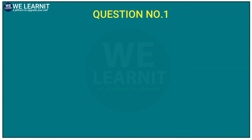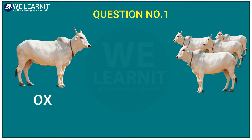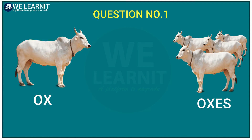Can you tell me what is this? This is an ox. Now, what do we call more than one ox? Can we say 'oxes'? If you thought 'oxes', then you are wrong.